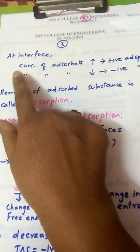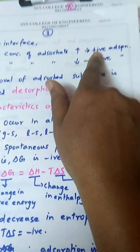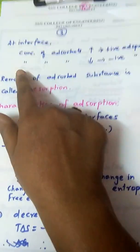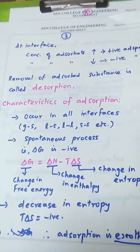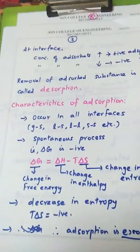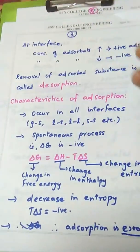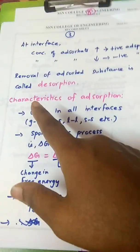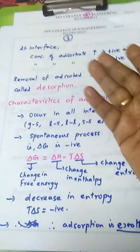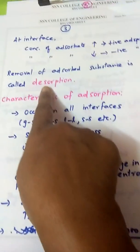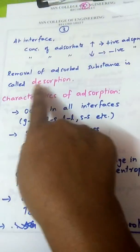If the concentration of adsorbate at the interface is high, it is called positive adsorption. If the concentration of adsorbate is low, it is called negative adsorption. The opposite of adsorption is desorption — when the adsorbate is removed from the adsorbent, it is called desorption.